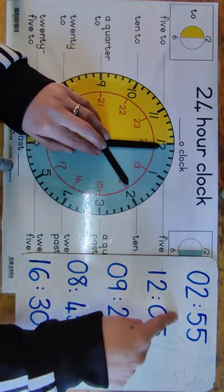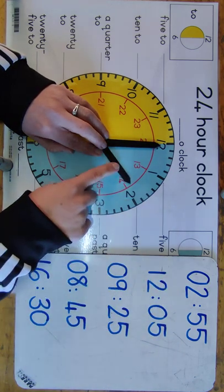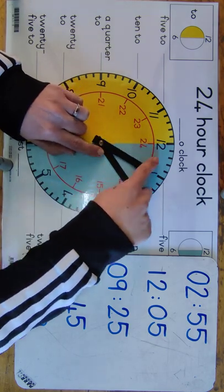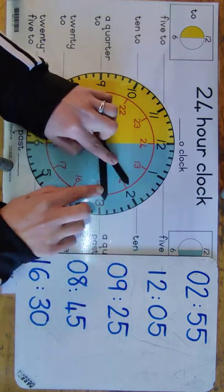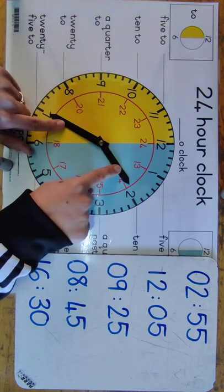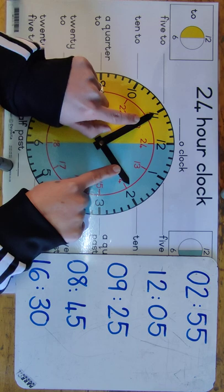Now, remember that on this side of the colon is the minutes that have passed this hour. So, from 2 o'clock now, I will move my hour hand and go, it's 5 past, 10 past, quarter past, 20 past, 25, 30, 35, 40, 45, 50, 55.